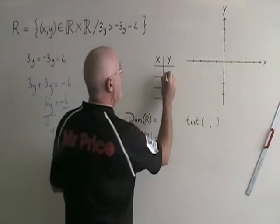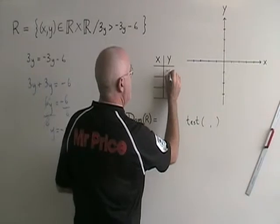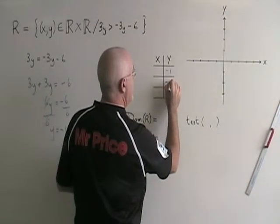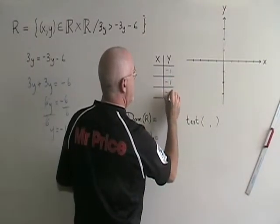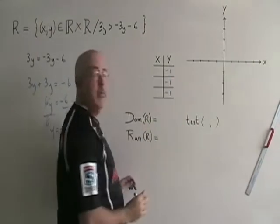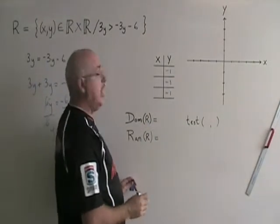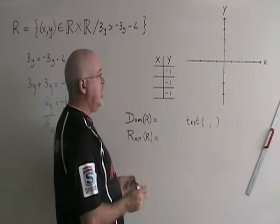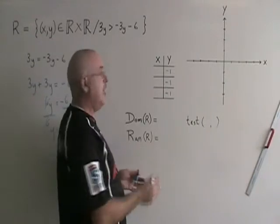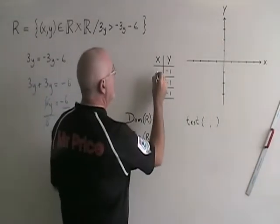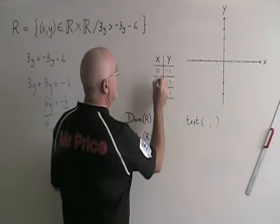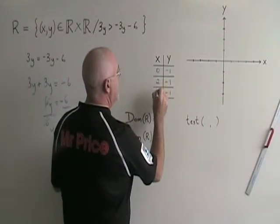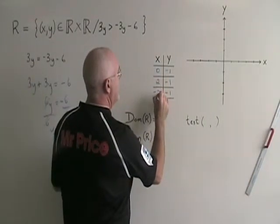Since y equals negative 1, y will be negative 1 all the way up and down my table of values, and I can make up any values I want for x. I'm going to choose 0, 2, and negative 2.